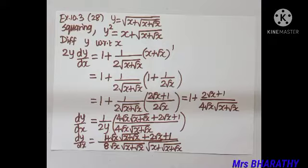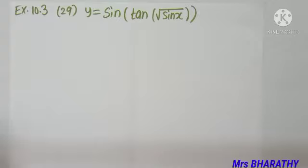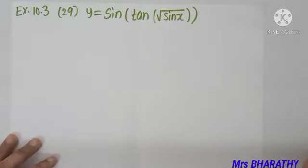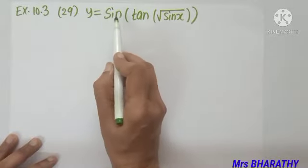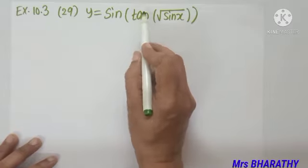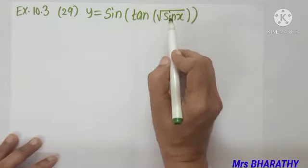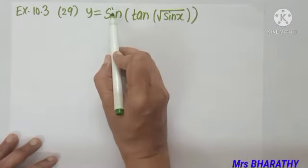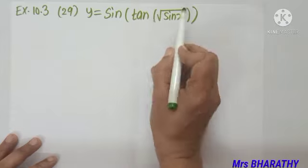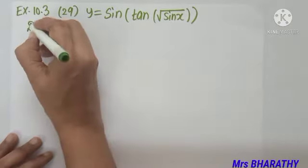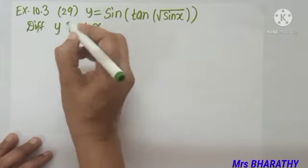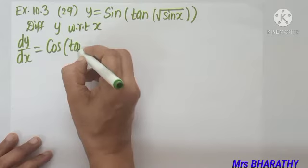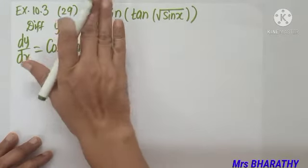One of the most challenging problems to understand chain rule. Question number 29: y = sin(tan(√(sin x))). See what we need to differentiate: first sin becomes cos, then tan becomes sec², then root becomes 1/(2√·), then sin x becomes cos x. So there are four steps. As we differentiate y with respect to x, sin becomes cos of tan(√(sin x)).